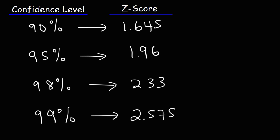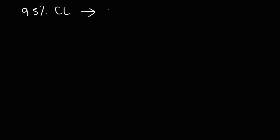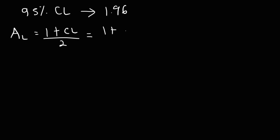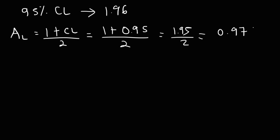Now let's talk about how we can get those numbers. We said that a 95% confidence level corresponds to a z-score of 1.96. First, we need to calculate the area under the curve to the left, and it's going to be 1 plus the confidence level divided by 2. The confidence level is 95%, or 0.95 as a decimal, so this is 1.95 divided by 2, which works out to be 0.975.